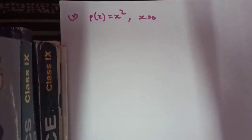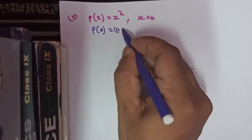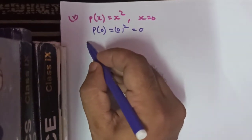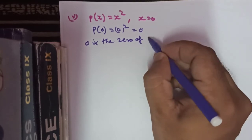In the fifth part, the polynomial is p(x) equals x squared, and we need to test whether x equals 0 is the zero of the polynomial. We find p(0): 0 squared equals 0. So we say that yes, 0 is the zero of the polynomial x squared.